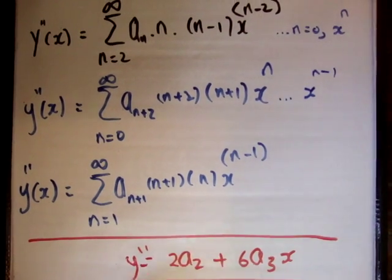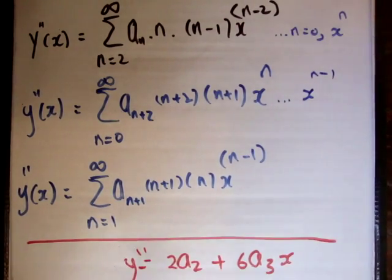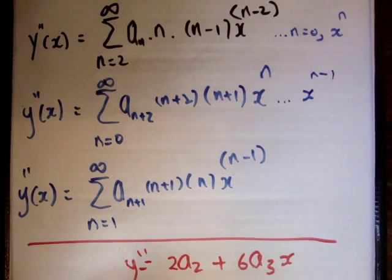And let's plug in n is equal to 1 into this equation. We're going to get a3, times 3, times 2, times x to the 1. So this is going to become 6a3x.